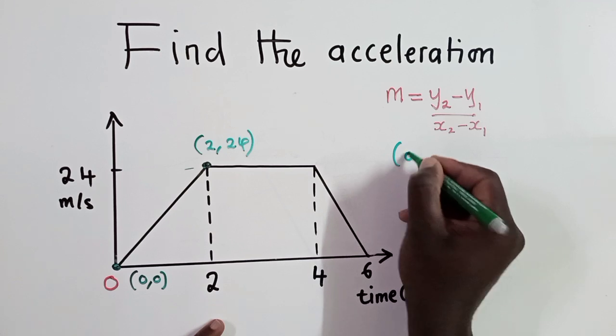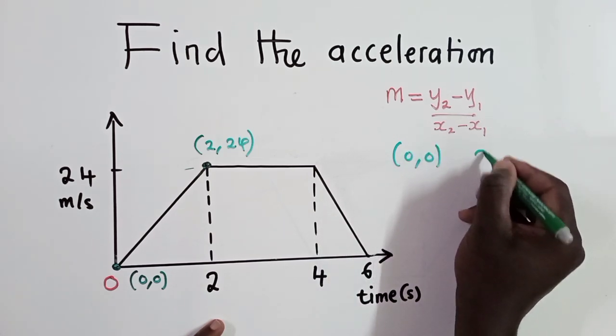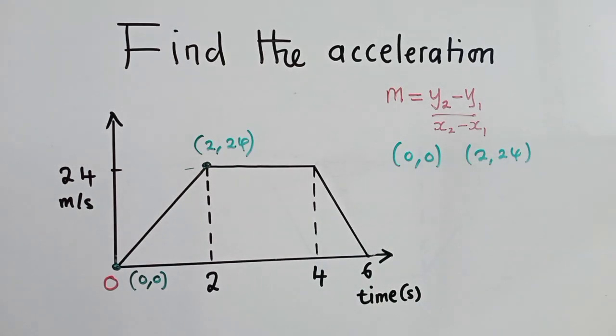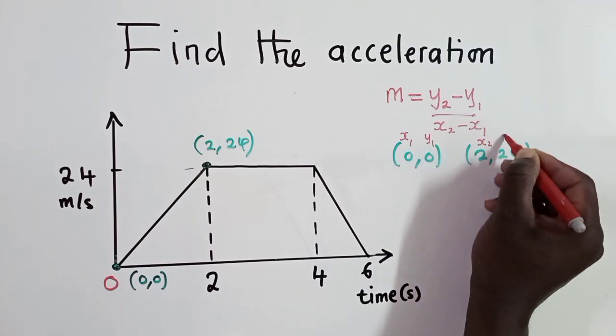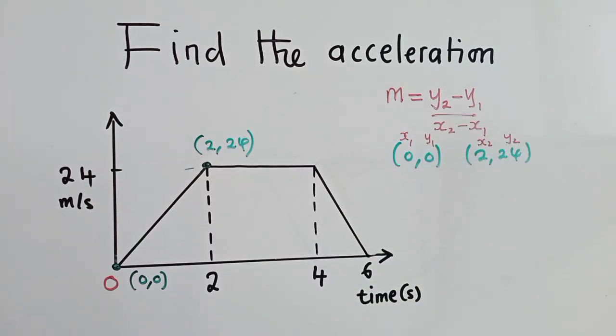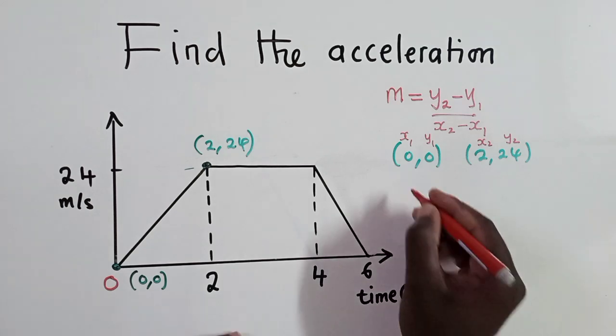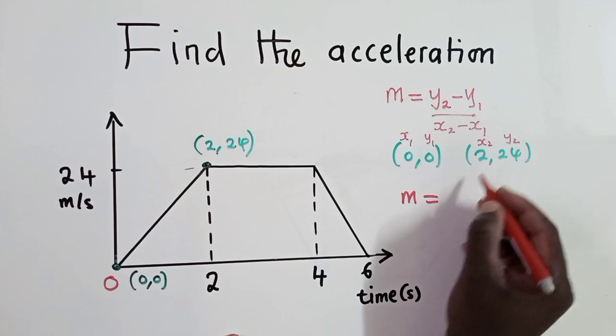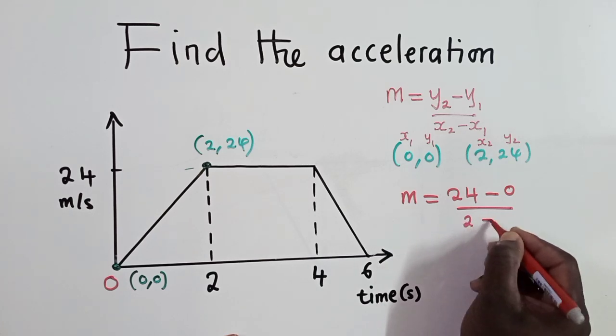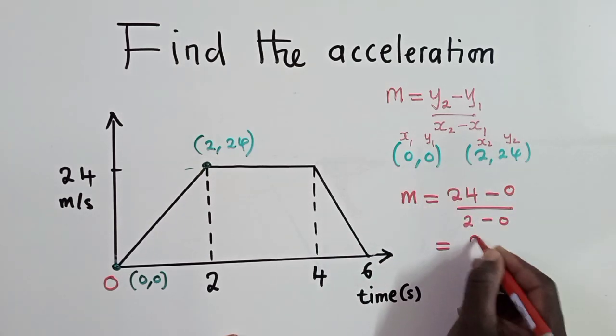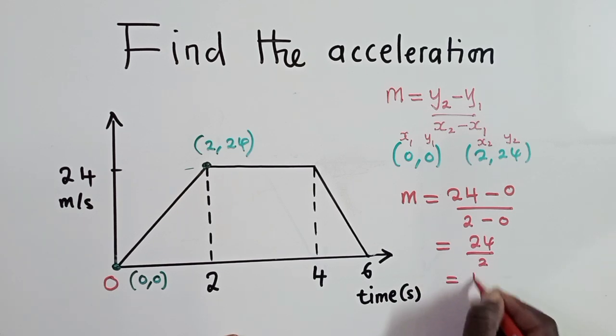So now, the coordinates that we have are 0, 0 and 2, 24. So out of these coordinates, you identify your x1, y1, x2, y2. So upon identifying, we now plug in our formula. So we're going to say m is equal to, what is our y2? Our y2 is a 24, minus our y1, 0, over our x2 is a 2, minus x1, which is a 0. We have a 24 there, over a 2, which is equal to 12 meters per second squared. So this is our acceleration. All what you need to know is that acceleration is the same as the gradient.